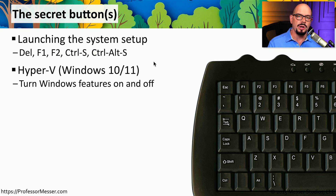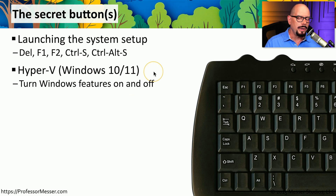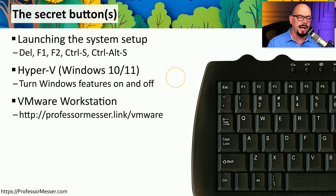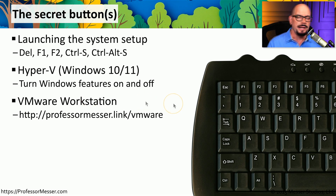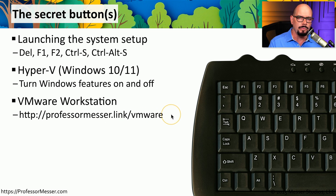Some desktop hypervisors also allow you to stop the VM from booting to go into the BIOS settings for that virtual machine. If you're in Windows 10 or Windows 11, you can use Hyper-V for this, or you can use third-party hypervisors such as VMware Workstation. If you're running macOS, you could run VMware Fusion. You can go directly to the VMware website, or use the link at professormesser.link/VMware to go to that page.